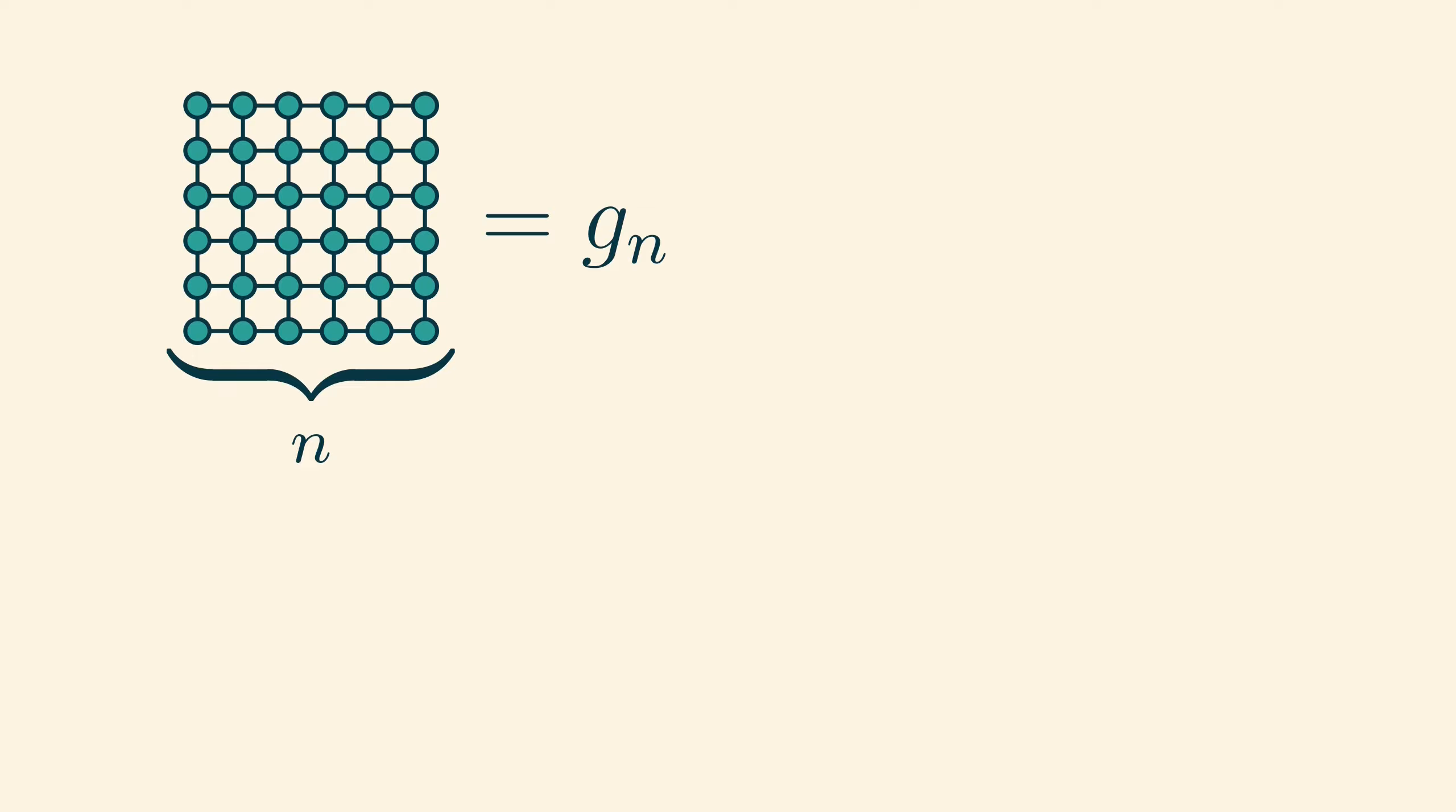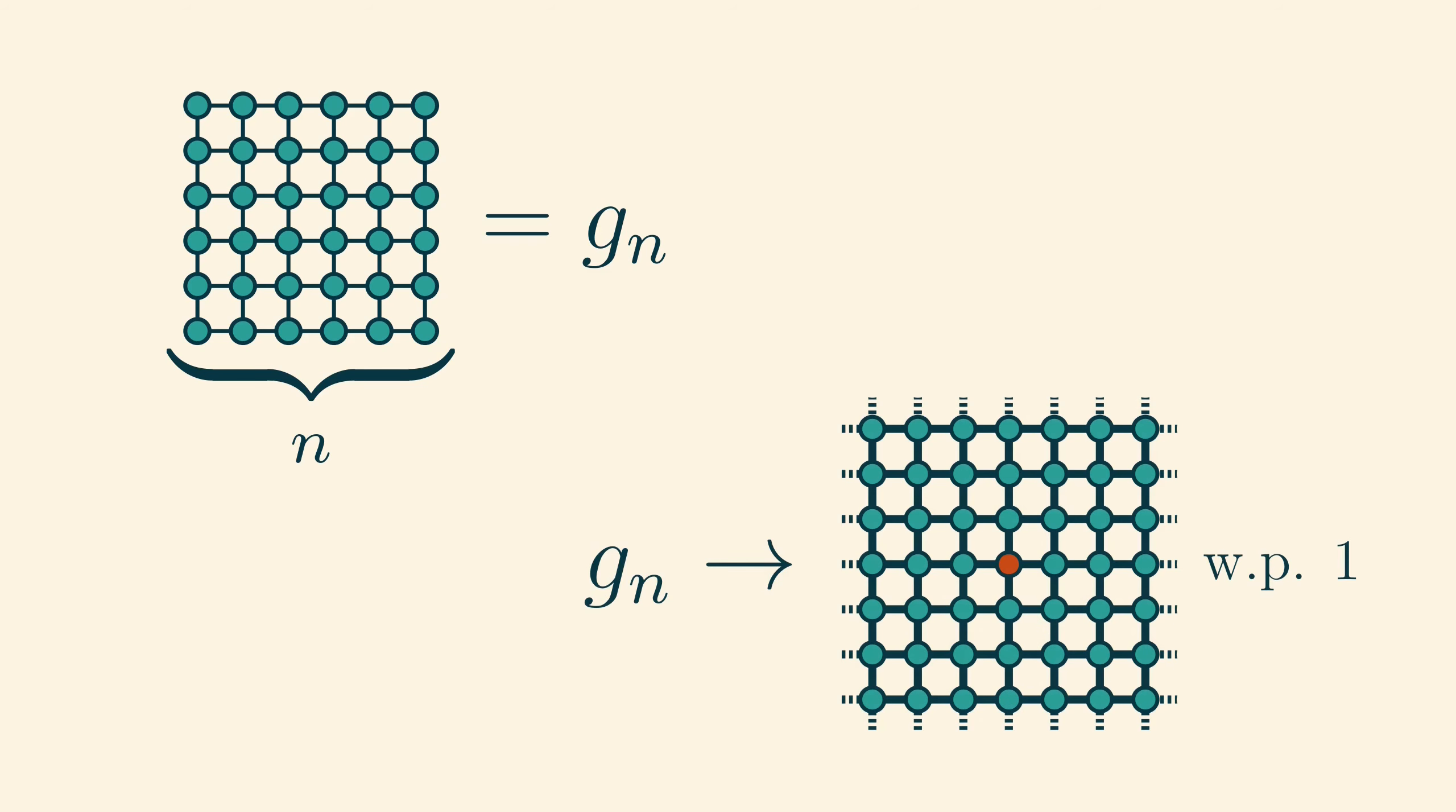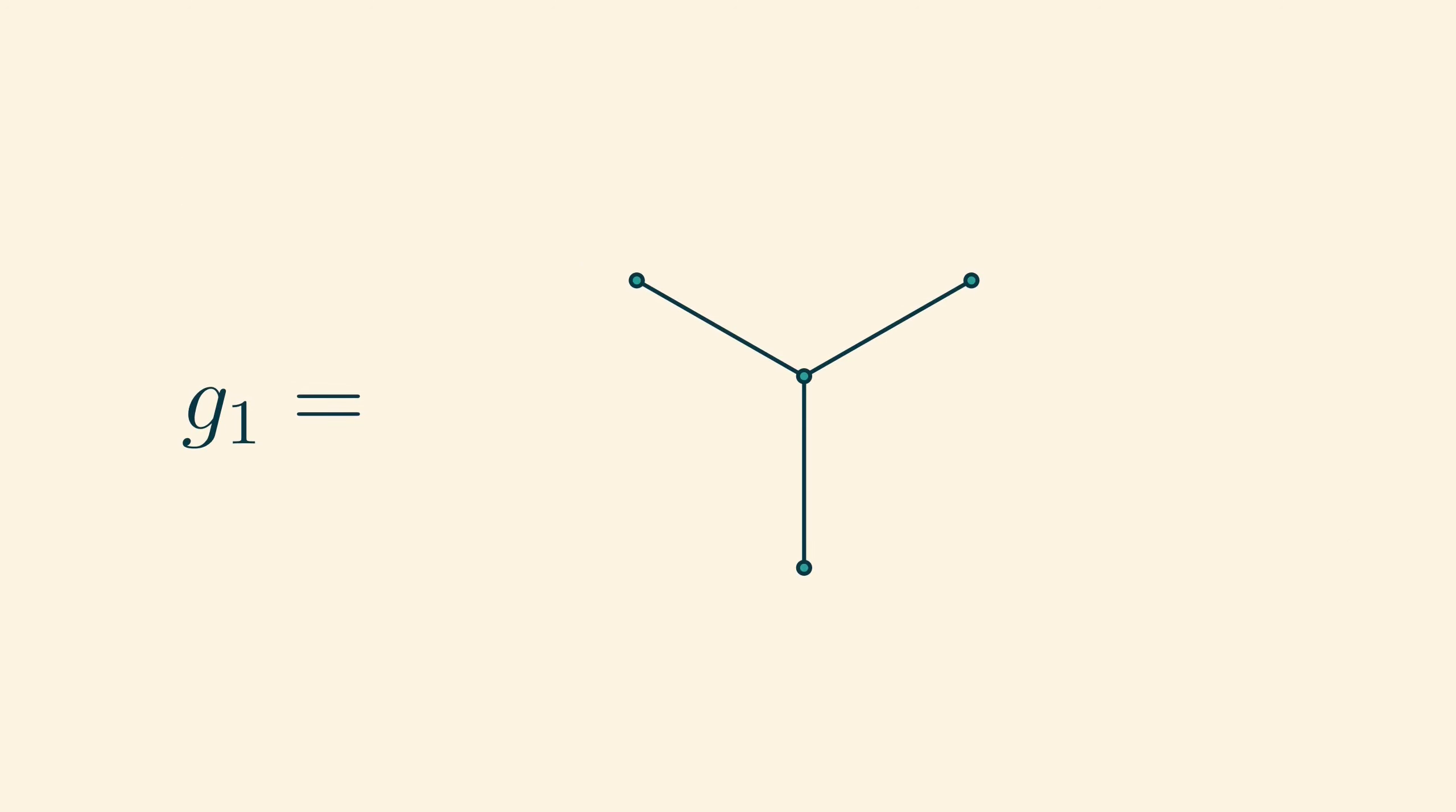What if we consider the sequence of square n by n grid graphs? Analogously to the limit of the path graphs, the limit here is concentrated on the rooted grid which extends infinitely in all directions. This works for much the same reasons as the path example because the number of vertices in the boundary of the finite grid is asymptotically small compared with the number of vertices in the whole grid.